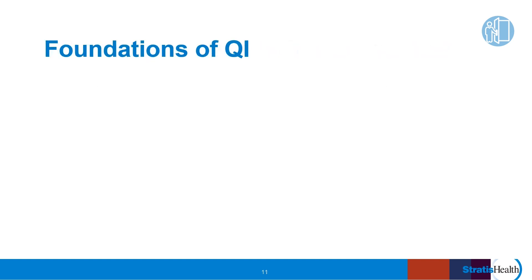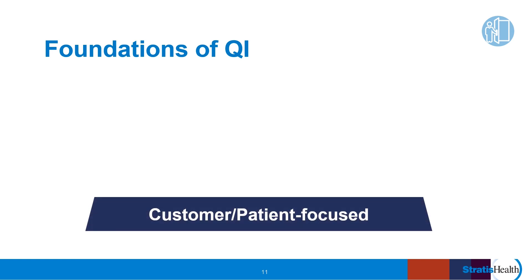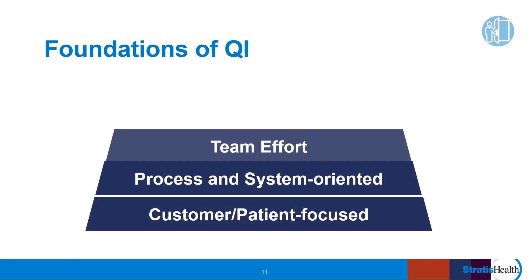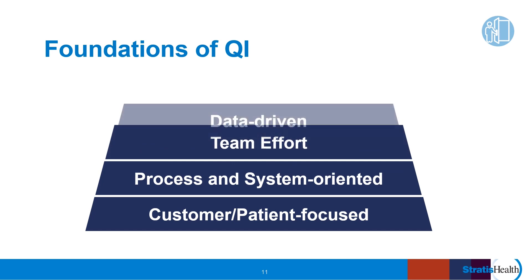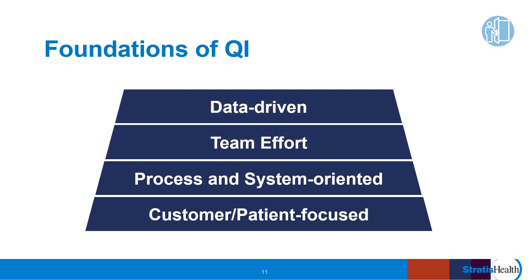QI has four foundational elements: being customer focused, process and system oriented, valuing quality as a team effort, and being data driven. Quality improvement should be customer focused, although defining customer can be a bit difficult in healthcare, in that the person paying is not necessarily the person who appears at your door seeking or needing your services. In healthcare, the patient — at least an insured patient — pays some as a premium, copay, or deductible, but the bulk of their care is paid for by an insurer such as a health plan, Medicare, or Medicaid.